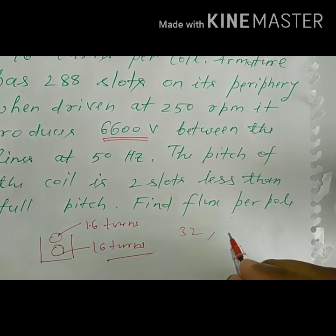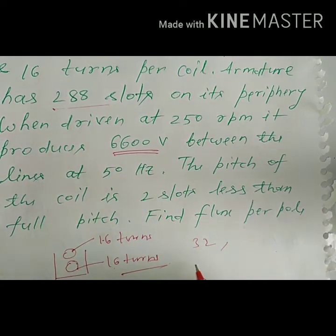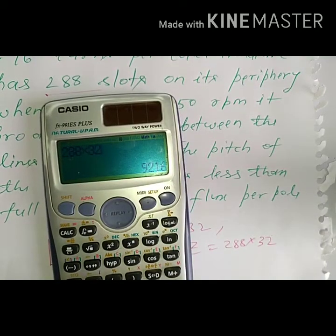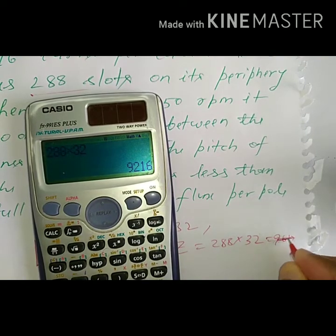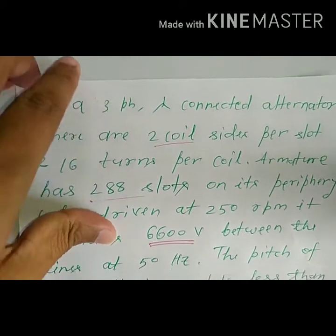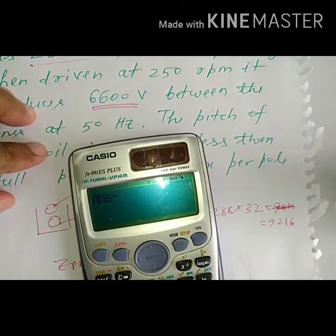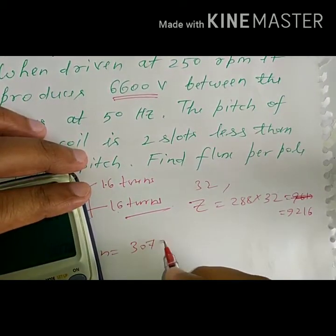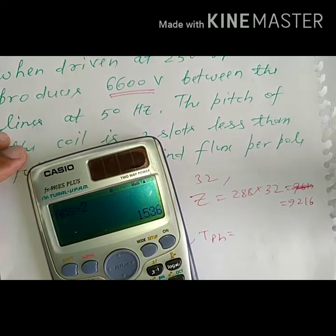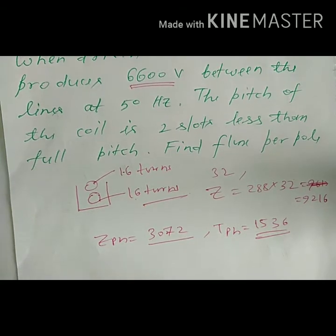Each slot has 32 conductors and there are 288 slots. So total Z equals 32 into 288 = 9216. Since this is a three-phase machine, conductors per phase Z_ph = 9216 divided by 3 = 3072. Therefore turns per phase T_ph = 3072 divided by 2 = 1536.